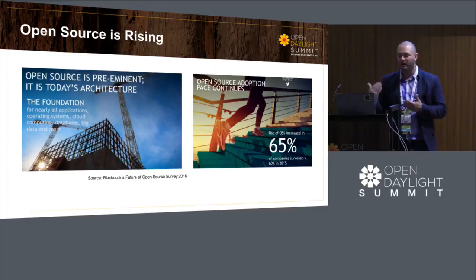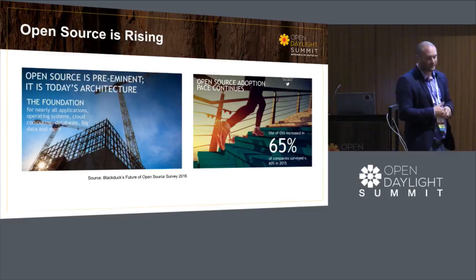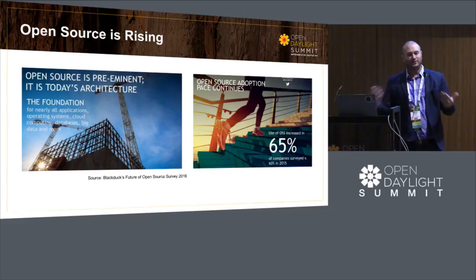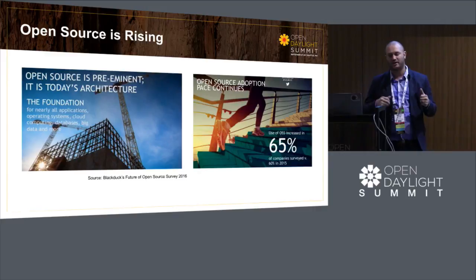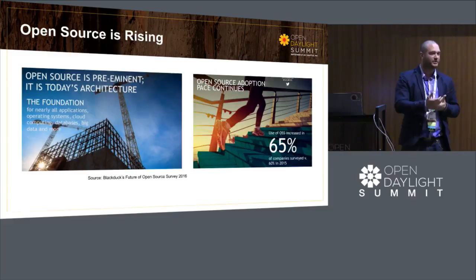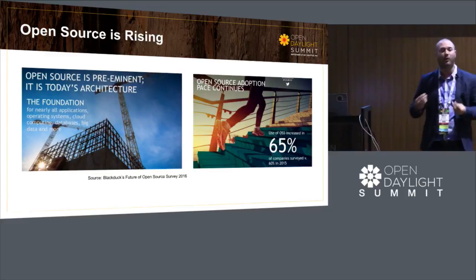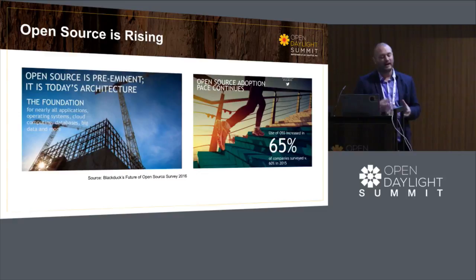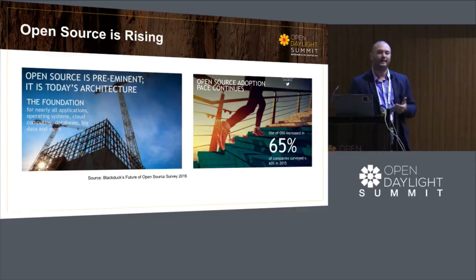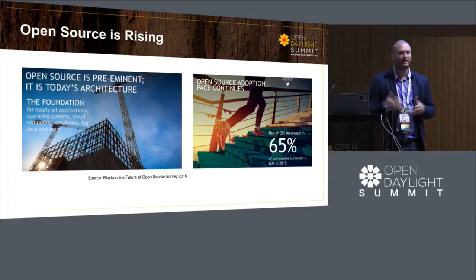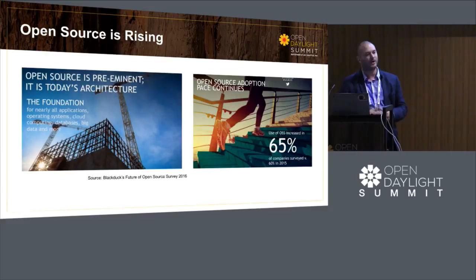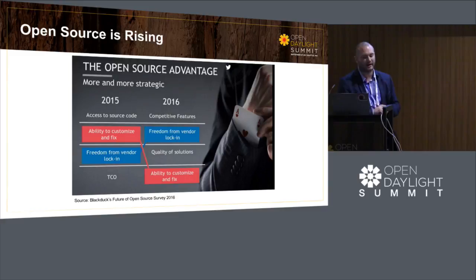The good news is that open source is still on the climb. Last year about 60% of surveyed individuals in the Black Duck Survey were leveraging open source in some way in their organization, and now it rose to 65% this year. Look at AT&T — John Donovan really went forward saying they wanted to use more open source in their solutions. Others are following the same footsteps. Why is open source more strategic compared to your proprietary solution?